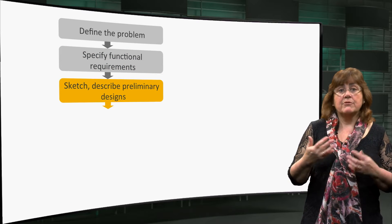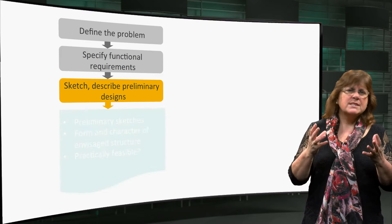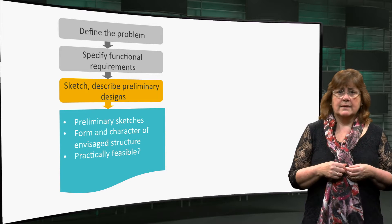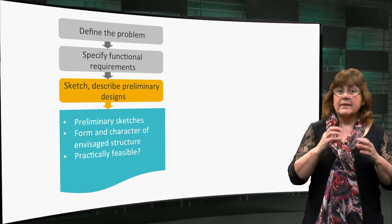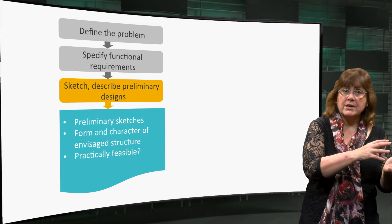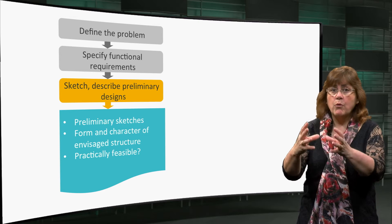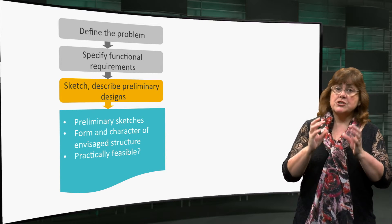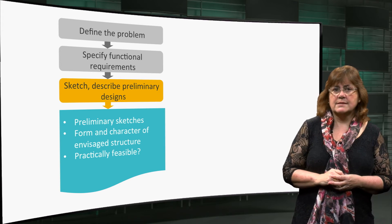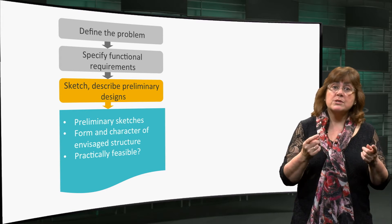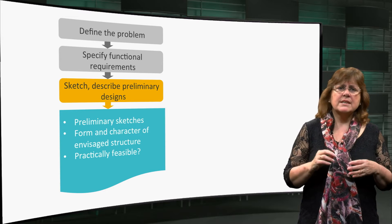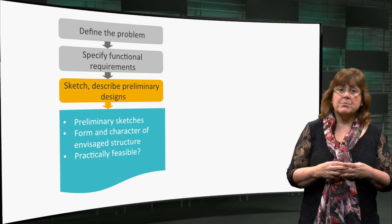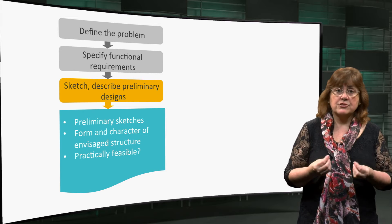The next step involves sketching a design — a first, preliminary idea. In the sketching process, the hydraulic boundary conditions are connected to the form and character of the structure envisaged to perform the required functions. This is an important step, not mentioned explicitly in most descriptions of the engineering design process, and yet it is essential.